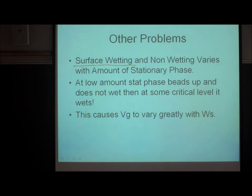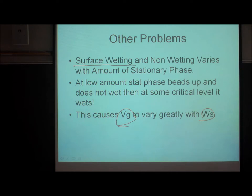When wetting doesn't work, you get very strange results. Plots of specific retention volume (VR-prime over WS) versus WS will not be linear or flat — they can actually show maxima. The peak shape is terrible, and the HETP is terrible. This is not something you want. You want to achieve a thin, uniform film.